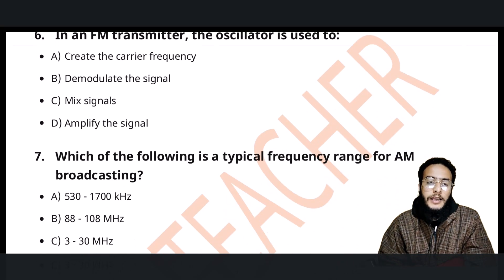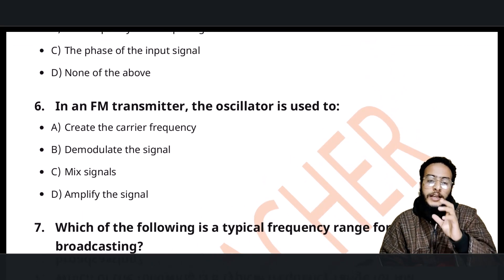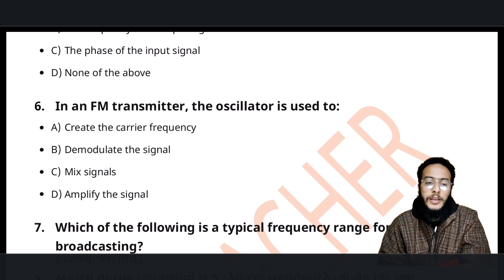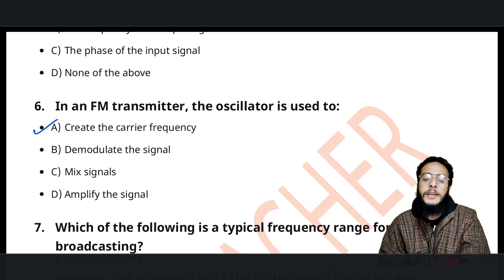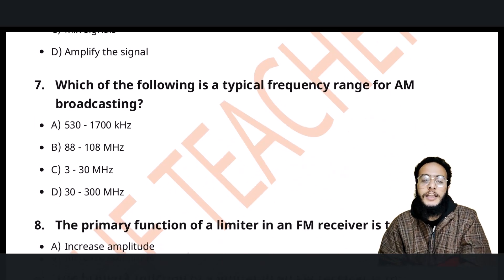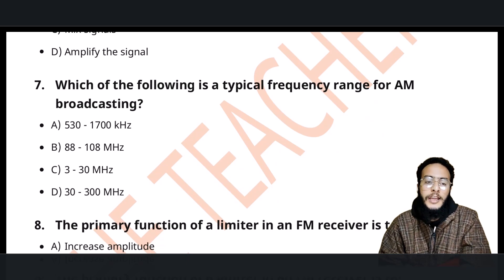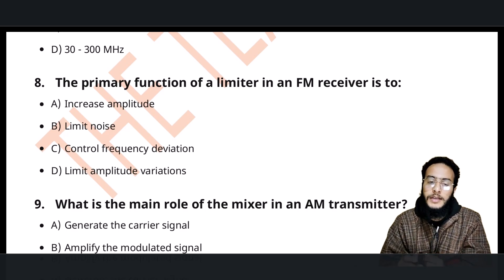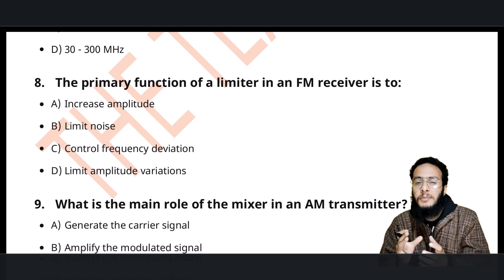Question number six: in an FM transmitter, the oscillator is used to generate the carrier frequency. The typical range of AM broadcasting — please remember — is 530 to 1700 kHz.